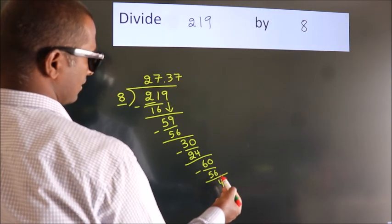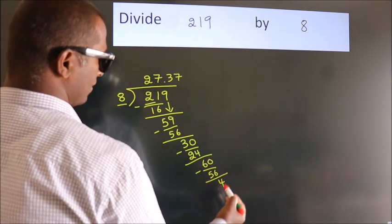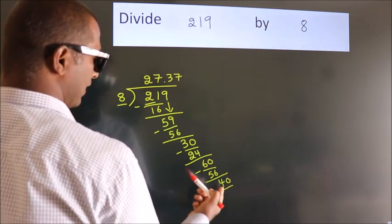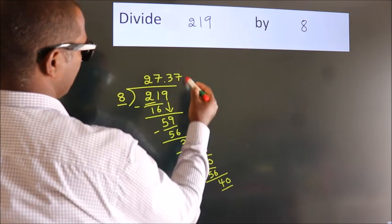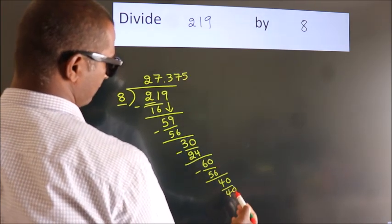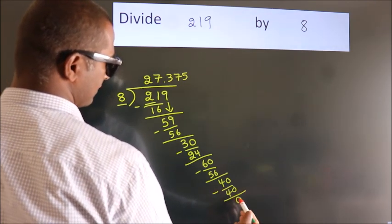After this, we bring down 0, so 40. A number close to 40 in the 8 table is 8 fives, 40. Now we subtract. We get 0.